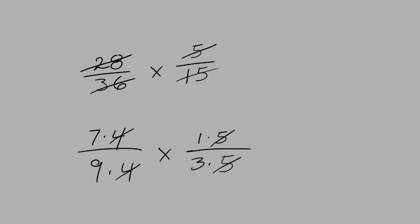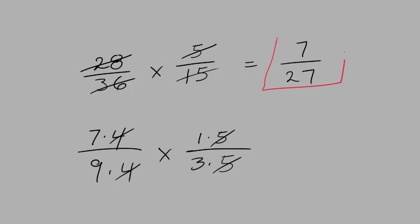We multiply what we have left over. In the top we have 7 times 1 which is 7, and in the bottom we have 9 times 3 which is 27. So 7 over 27 is our final answer.